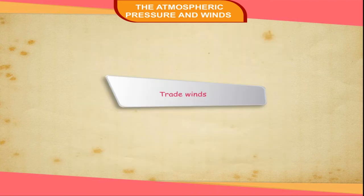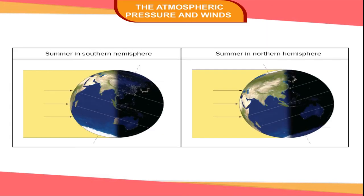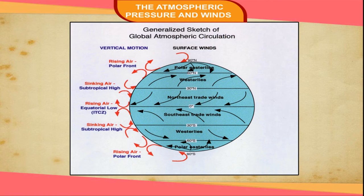Trade Winds: They tend to blow from high pressure to low pressure areas, but they are deflected to the right in the northern hemisphere and to the left in the southern hemisphere. So, the trade winds blow from subtropical high pressure belts towards equatorial low pressure belts. In the northern hemisphere their direction is northeast, and in the southern hemisphere their direction is southeast. East being the common direction, they are also known as easterlies. In olden days they were helpful for traders, which is why they are called trade winds.